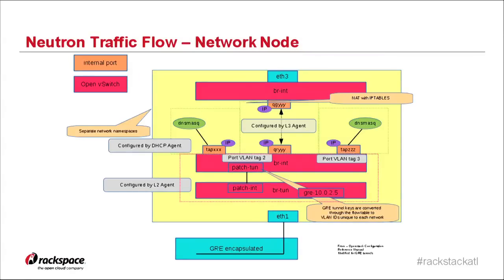On the network node, data comes into the tunnel bridge flow tables, which strip off the GRE tunnel key or VXLAN ID or VLAN ID, tag it with an internal Open vSwitch VLAN, and eventually that goes to the integration bridge. Based on its internal VLAN tag, it will go to the proper DHCP namespace or router namespace for that network. We have VLAN tag two for one network and its DHCP namespace, and another for the second network's namespace. The VLAN tag guarantees to keep that network traffic separate.